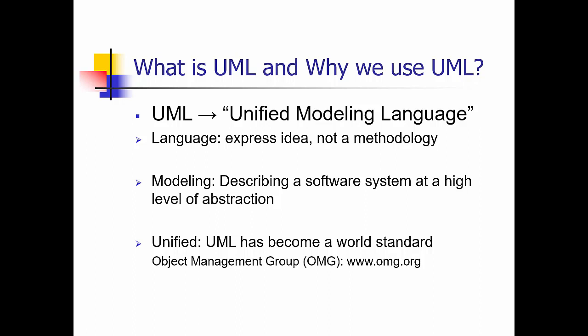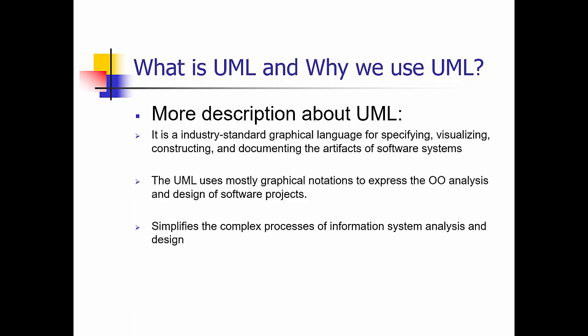For example, UML can model the process flow in a manufacturing unit. It is an industry-standard graphical language for specifying, visualizing, constructing, and documenting the artifacts of software systems. UML is a pictorial language used to make software blueprints, particularly for object-oriented analysis and design. It simplifies complex processes of information systems analysis and design, and it is an industry standard.